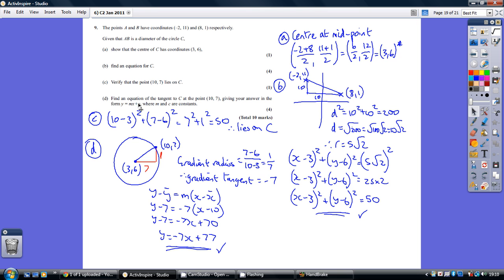Now, for part D, we've got to find an equation of the tangent at this point on the circle, giving it in this format. So, again, I think a quick sketch helps us gather our thoughts. So, here's the centre, here's the point we're talking about.